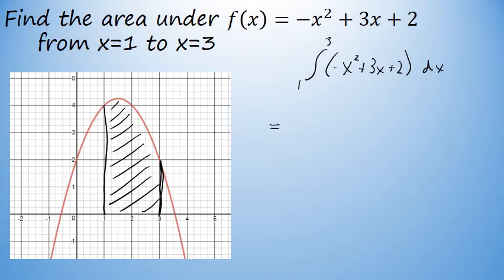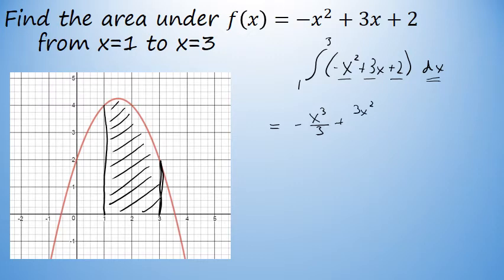The first thing I'll do is integrate each term in the function using the power rule for integration. The integral of negative x to the second power is negative x to the third power over 3. When integrating x to a power with respect to dx, we raise the power by 1 and divide by that number. The integral of 3x is 3x squared over 2, and the integral of 2 with respect to x is 2x.